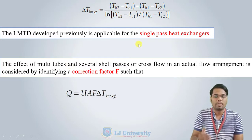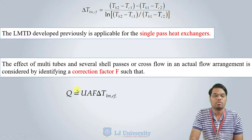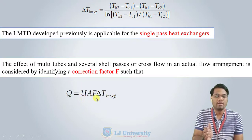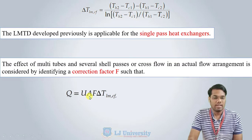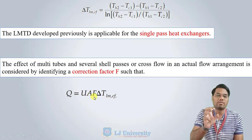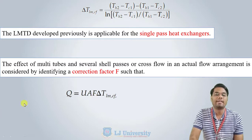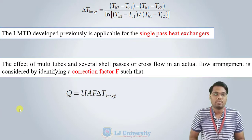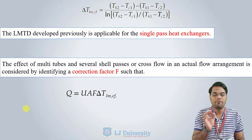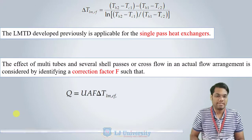Our equation for multi-tube, multi-shell-pass heat exchangers becomes Q = U·A·F·ΔT, where U is the overall heat transfer coefficient, A is the area, F is the correction factor required for the multipass or shell-and-tube heat exchanger, and ΔT is the mean effective temperature difference of the whole heat exchanger.